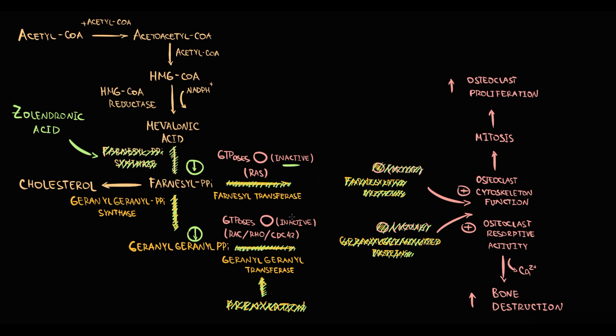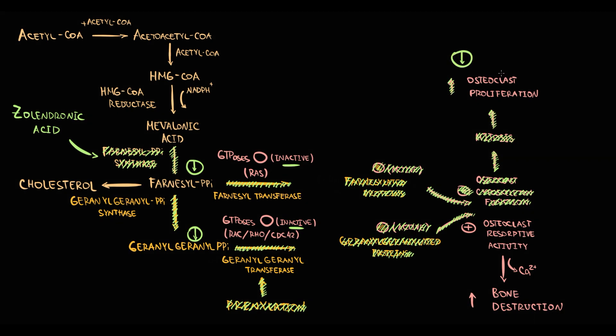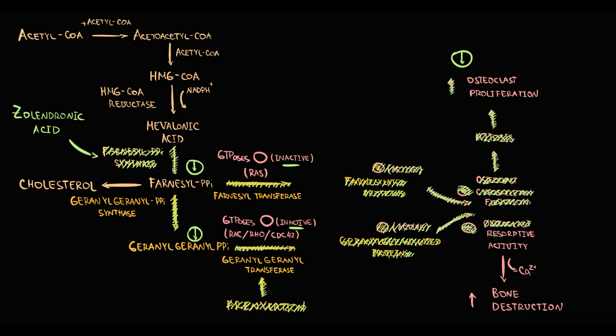Without activation of GTPases, osteoclast cytoskeletal regulation becomes disrupted. So mitosis becomes impossible, and this results in decreasing osteoclast proliferation rate. And also osteoclast resorptive capacity decreases, thereby bone destruction decreases.